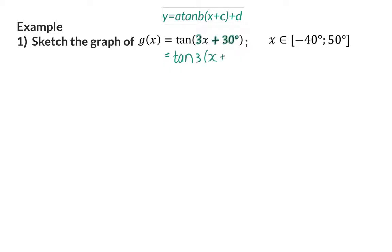Once you've done this, you will see that there's a shift of 10 units to the left. Because the b value influences the period of the graph, it will also influence the steps you need to indicate where important coordinates are found. For the standard tan graph, every 45 degrees we find an important coordinate.